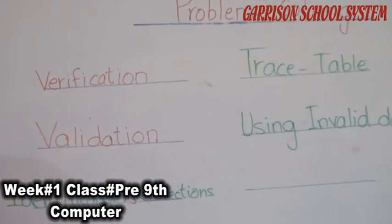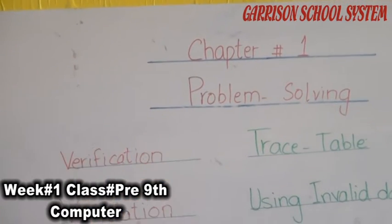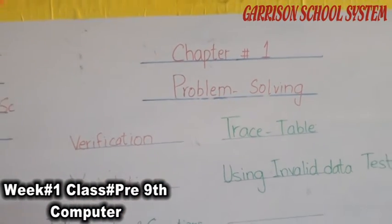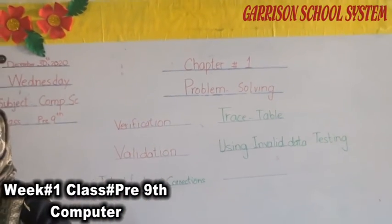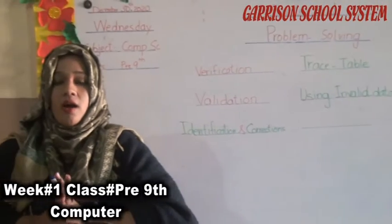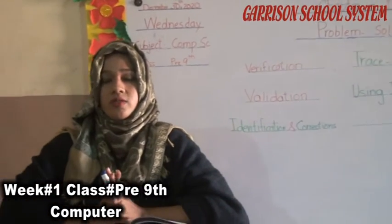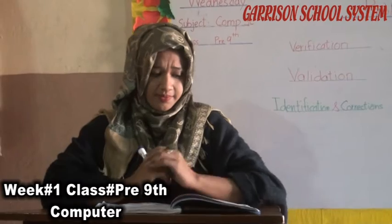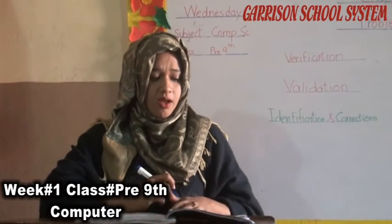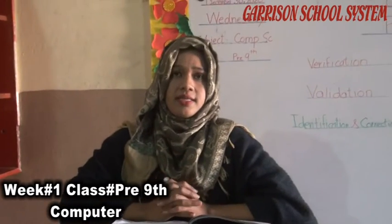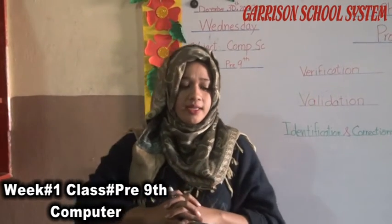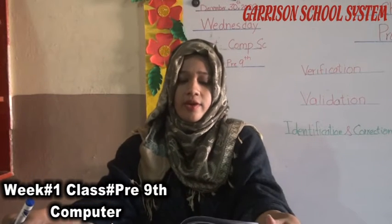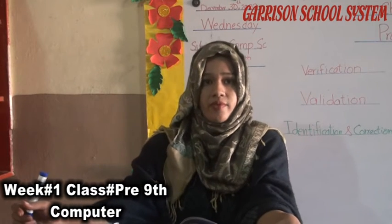The chapter name is problem solving. In this chapter, we will learn how to divide problems into sub-problems, covering algorithms, flowcharts, and step-by-step problem solving. We will also understand how to test our data — including valid test data, invalid test data, boundary, wrong, and absent types of data.